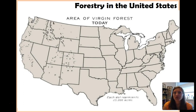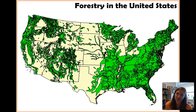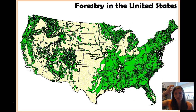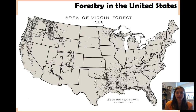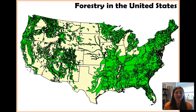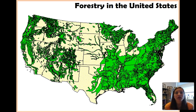But at the same time, trees come back, and the United States is a great example of this. This is a similar map representing today, but looking at total forest cover. Comparing that to the previous map showing forest that's existed for 300 years versus what it is today — this is virgin forest estimated for 1620, and this is what it is today. It is less today than it was back then, but not by that much. We have been able to regrow our forests.